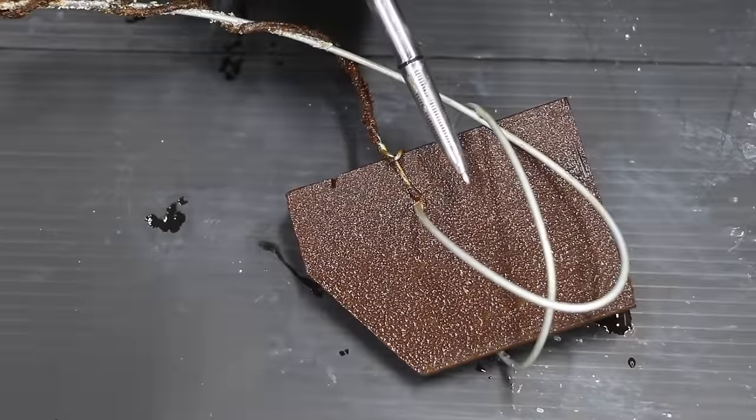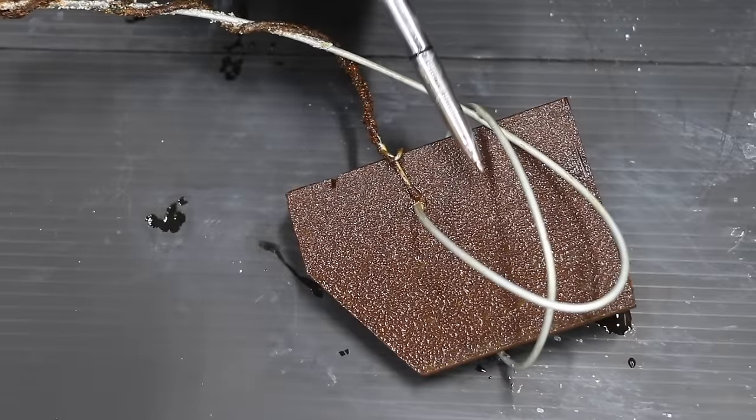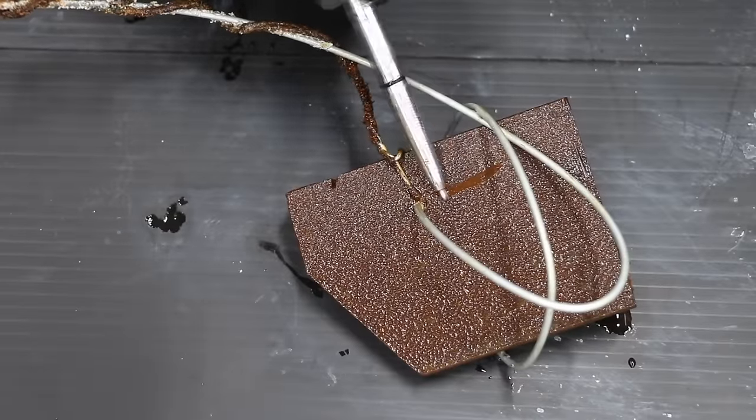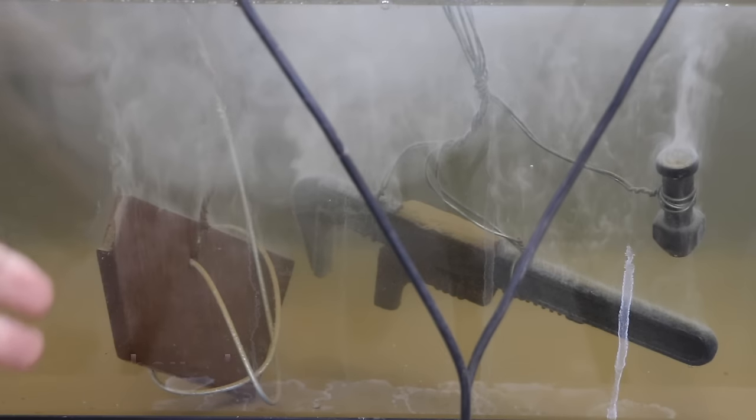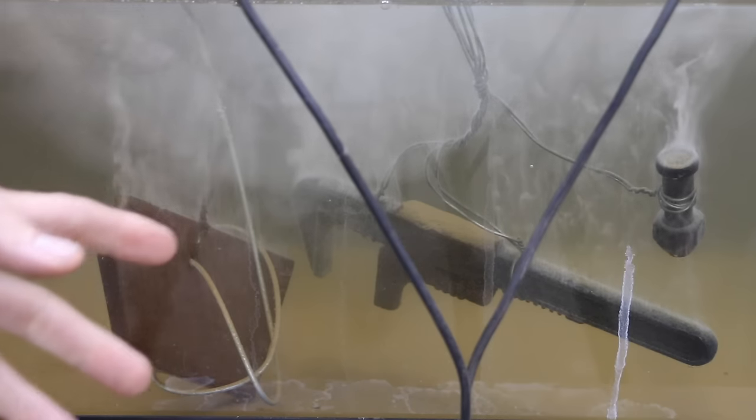This is our sacrificial piece of steel that we're using in the electrolysis process, and look at all that rust. Wow, this thing has really accumulated a lot of rust. It's been right at 96 hours or four days since we began this test, so I'm really excited to pull out this wrench and the bolt to see how they look.